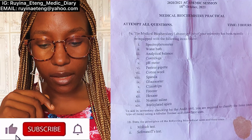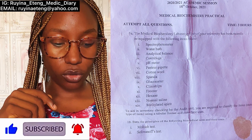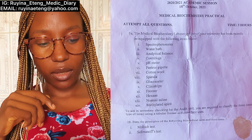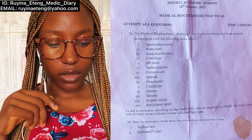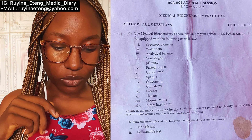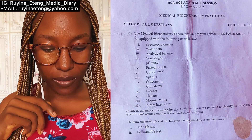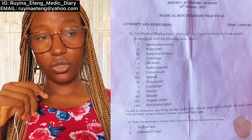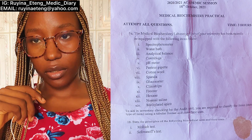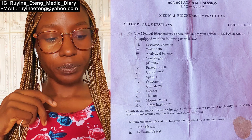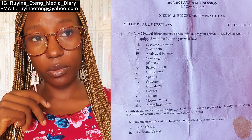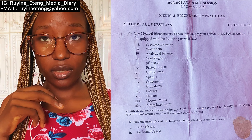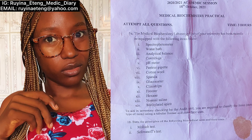For chemistry, I have the question paper here. For Question 1a, we were asked to classify equipment including a spectrophotometer, analytical balance, centrifuge, pH meter, Pasteur pipette, conical flask, spatula, glucometer, testing strips, freezer, hexane, normal saline, and methylated spirit. The classification was based on whether each item is equipment, apparatus, or a reagent. We were also asked to state their uses in tabular form.